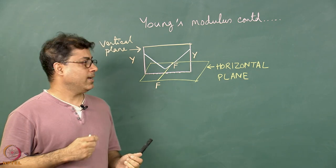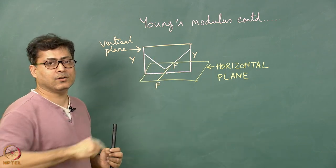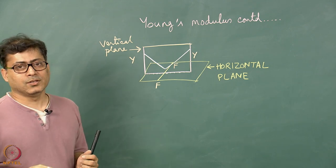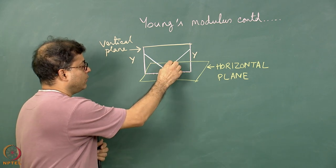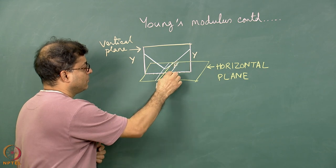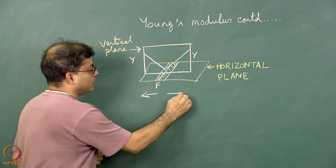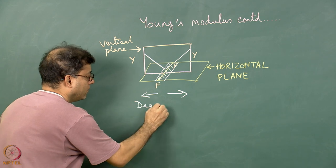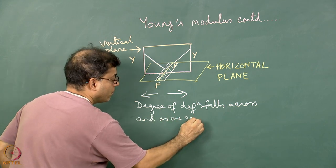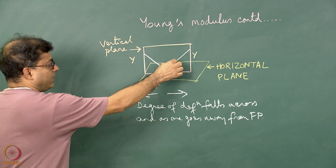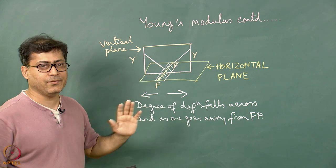Why does this happen? This has not been found in all places, but in several places in the world, from sampling, this kind of V-pattern of Young's modulus or rock strength has been found. It has happened because when faulting occurs, rocks close to the fault plane are more intensely deformed, and the degree of deformation reduces across the fault plane. By the way, FF here is the fault trace — not the fault plane. The fault plane has intersected a horizontal surface; FF is the fault trace.